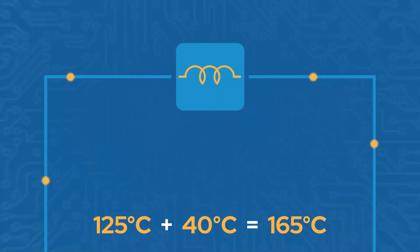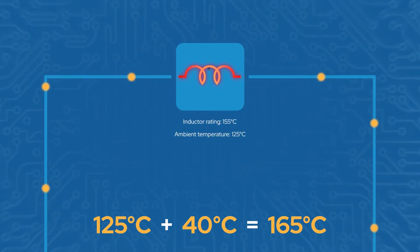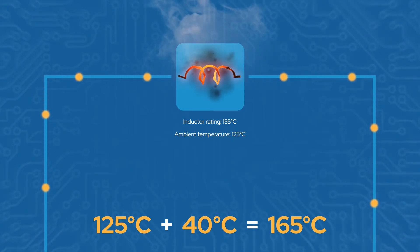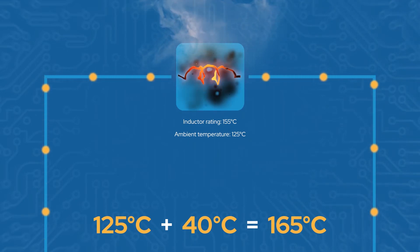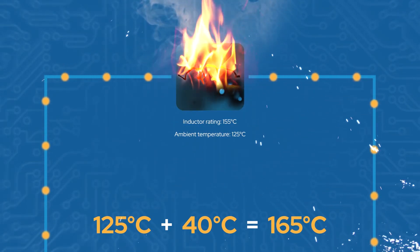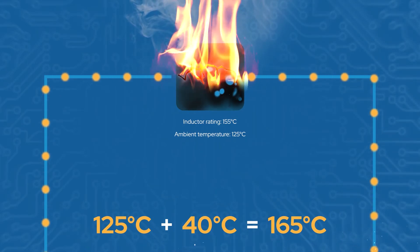So why does the rated current matter? It tells you how much current the inductor can handle for a given temperature rise due to self-heating. This is important because the operating temperature range of the inductor includes self-heating. For example, if you're operating in a 125 degree Celsius ambient environment and your inductor is rated for 155 degrees Celsius, operating at the full current rating means the inductor will be at 165 degrees Celsius, which can result in damage or failure. That is why the rated current of an inductor matters, and you should always operate below it.